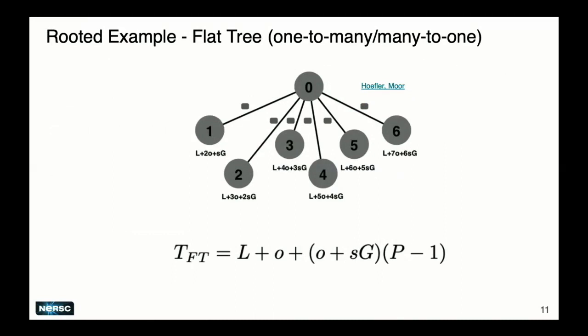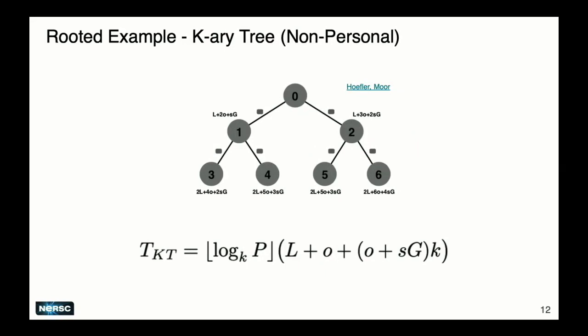Communication primitives can be rooted or rootless. Rooted ones include broadcast (one process sends to all) or gather (one process collects from all) - for example, a parameter server uses rooted communication. The simplest implementation is a flat tree: you send or receive messages from every worker individually. This scales linearly with the number of workers - the most basic approach, but it's part of many other communication algorithms.